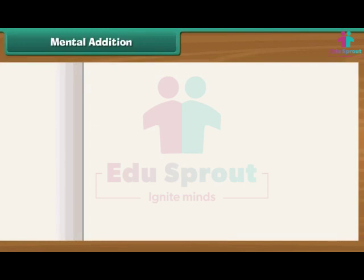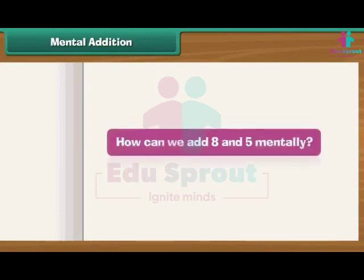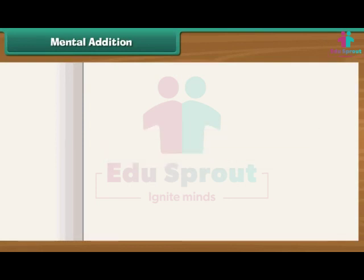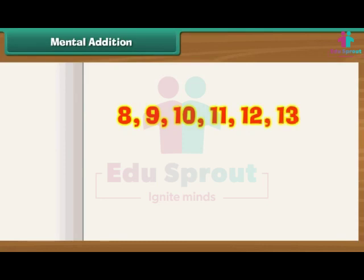Mental addition — how can we add 8 and 5 mentally? Simple! We count ahead of 8: 9, 10, 11, 12, 13. So 13 is the answer.